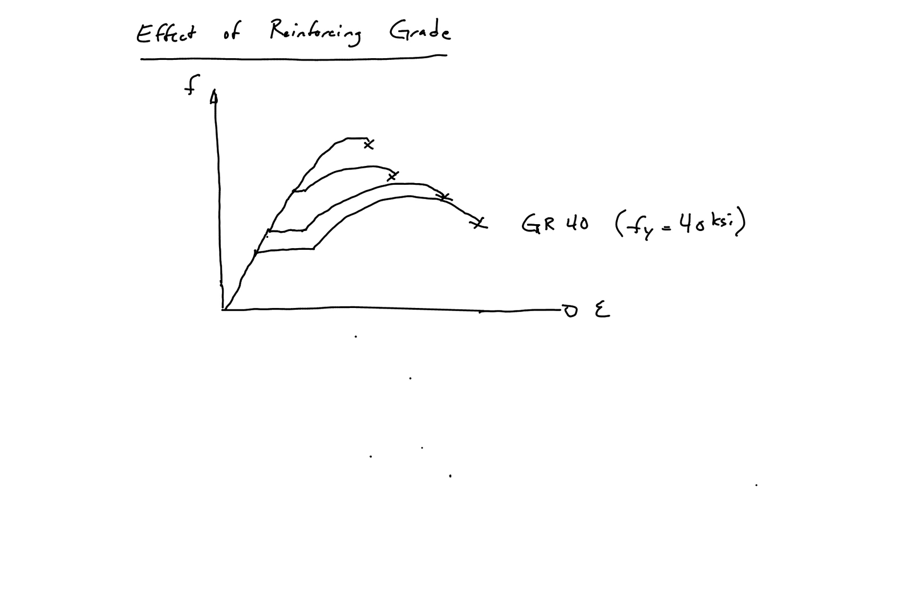So typically this happens around grade 90, or maybe grade 75 is when you're going to start not seeing a yield plateau any longer.